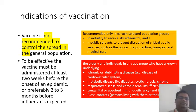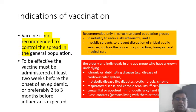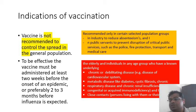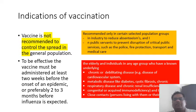Vaccination is not recommended for the general population to control a pandemic — it is not feasible to manufacture 7.6 billion doses. Vaccine is only recommended for selected populations: first responders such as ICU workers, casualty staff, police, fire protection, transport, and medical care personnel should receive the vaccine first.